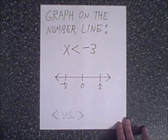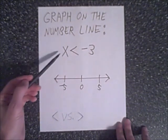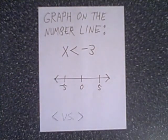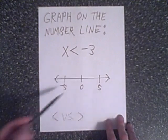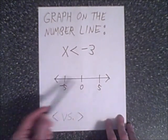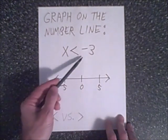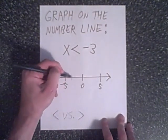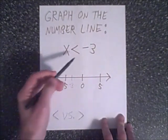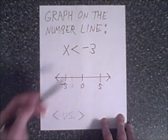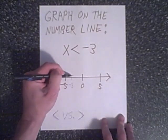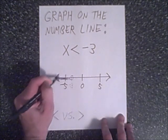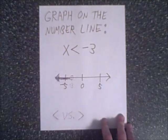The first example is rather simple — it's a graph on a number line. X is less than negative 3. The number line is labeled with negatives on the left and positives on the right. You go to the coordinate of negative 3, and since x is less than negative 3, we have an open circle and shade to the left of negative 3.